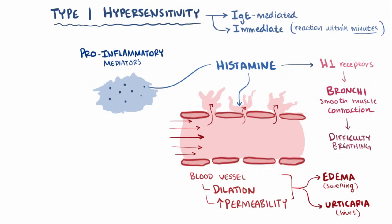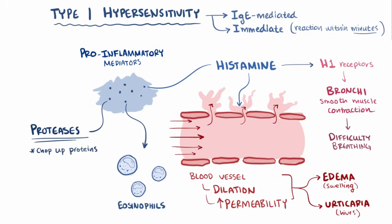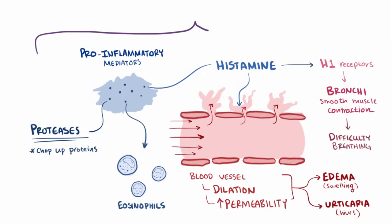In addition to histamine, mast cells release other pro-inflammatory mediators, including some that activate eosinophils and proteases which chop up large proteins into small peptides. The effects of these molecules are called early phase reactions, and they happen within minutes of the second exposure.